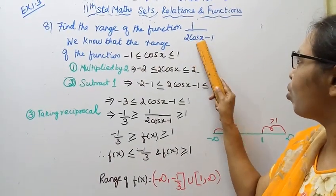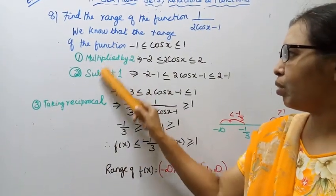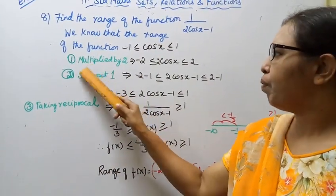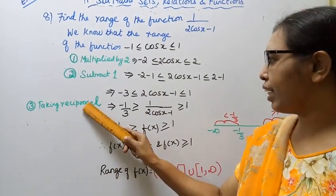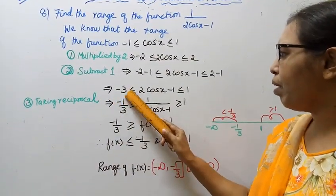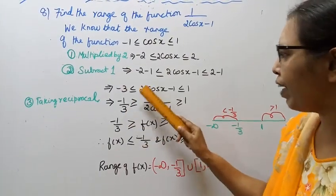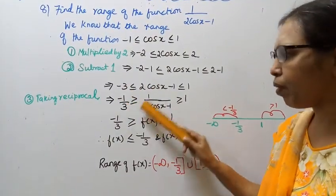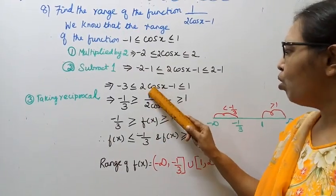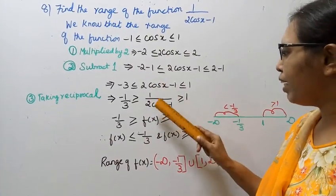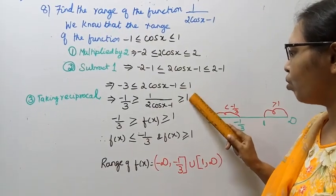So, 2cos x - 1 lies between -3 and 1. Taking reciprocal — this is step 3: multiply by 2, subtract 1, then take reciprocal. Taking reciprocal, -1/3 is the result on one side. The inequality, when taking reciprocal, gives: -1/3 ≥ 1/(2cos x - 1) or less than or equal to 1.